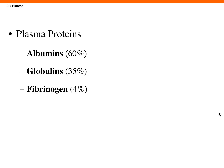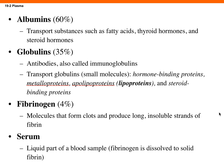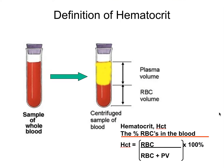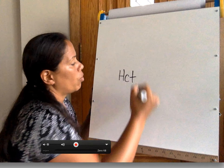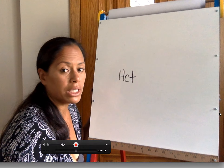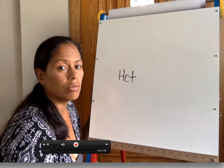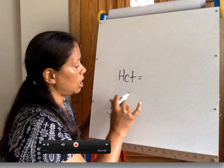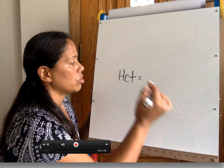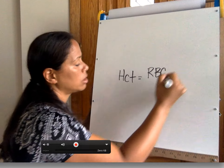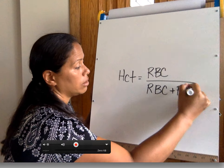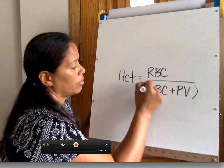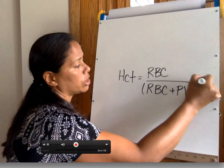Fibrinogen is associated with clotting and clot formation. Hematocrit deals with red blood cell count — it tells you what percentage of the blood is made up of red blood cells. Red blood cells carry oxygen to tissues in need. So hematocrit is calculated as red blood cells divided by total blood volume, times 100%.